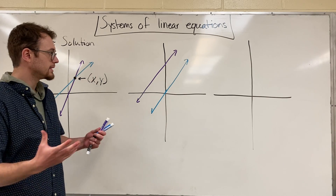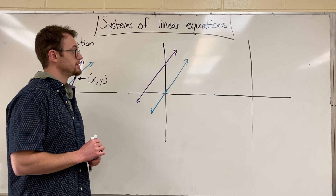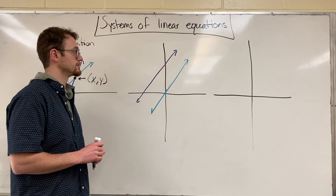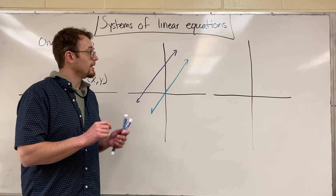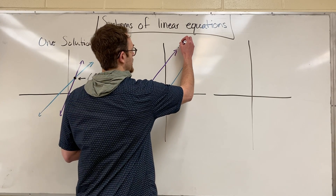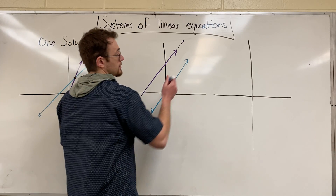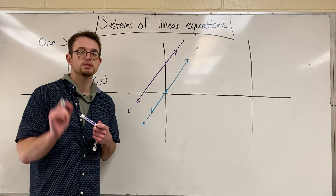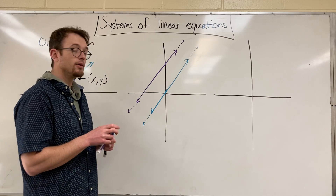You might say, 'I don't know what the answer is, I can't answer this.' Yes you can. The answer is that there is no answer — there is no solution. And why is there no solution? Because if these lines are parallel — and this goes to vocabulary — if they keep going forever and ever and they have the same slope, which makes them parallel, they will never ever intersect.